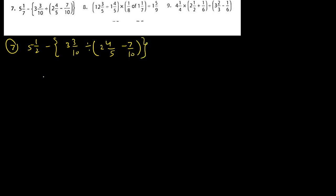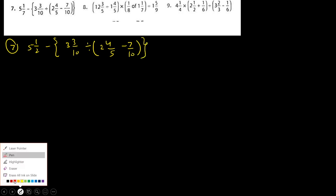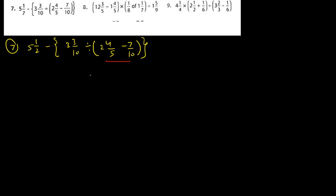Now let us solve Question number 7: 5 whole 1 upon 7 minus curly bracket, 3 whole 3 upon 10 divided by small bracket 2 whole 4 upon 5 minus 7 upon 10, small bracket close, curly bracket close. First we solve the small bracket, but first we change all mixed fractions into improper fractions.